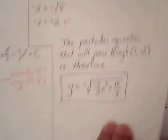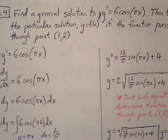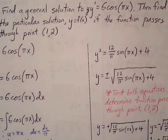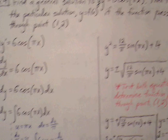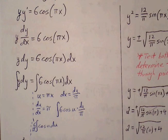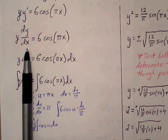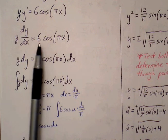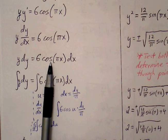Let's continue with example 4, the last example for section 6.3. Find a general solution to y times y prime equals 6 cosine of πx. Then find the particular solution, y equals f of x, if the function passes through the ordered pair (1, 2). We start with y·y prime equals 6 cosine πx. Rewriting y prime as dy over dx, the equation is already pretty much separated — we just move dx to the right side. So y dy equals 6 cosine(πx) dx.